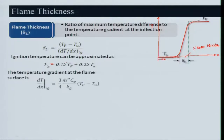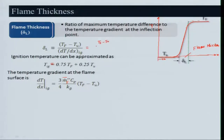The temperature gradient at the flame surface — we have already derived that dT/dx equals (3/4) × ṁ''_f_bar × C̄_p / k_g × (T_f − T_u), where ṁ''_f_bar is the average reaction rate in the reaction zone, C̄_p is average specific heat, and k_g is thermal conductivity. In place of T_i we used the approximation mentioned above.